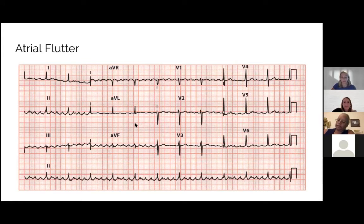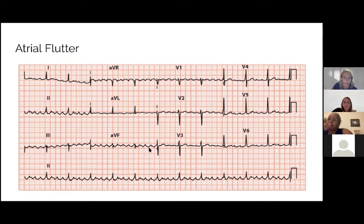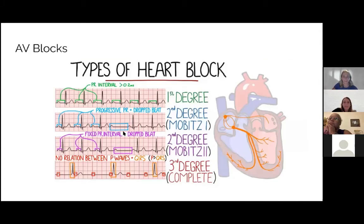Atrial flutter is characterized by classic sawtooth waves and is different from AFib. QRS complexes may be regularly or irregularly spaced depending on the degree of block — for example, 3:1 flutter waves per QRS. Interestingly, flutter waves can distort the T wave and sometimes mimic ST elevation, which can be misleading clinically.